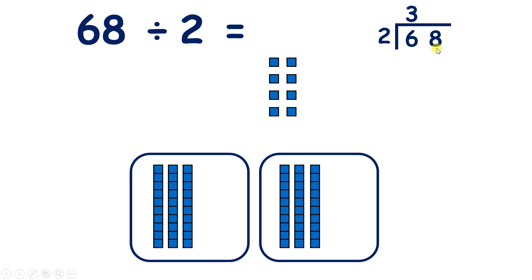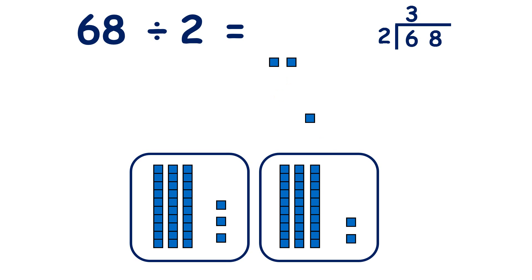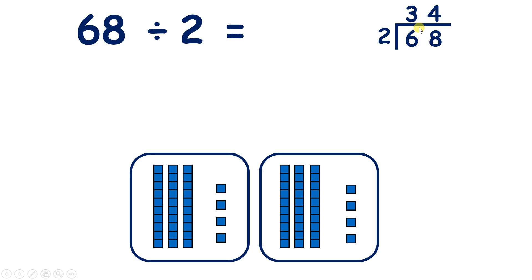Now we can divide our 8 units by 2. If we share out those 8 units, we now have 4 units in each group, because 8 divided by 2 is 4. So 68 divided by 2 equals 34.